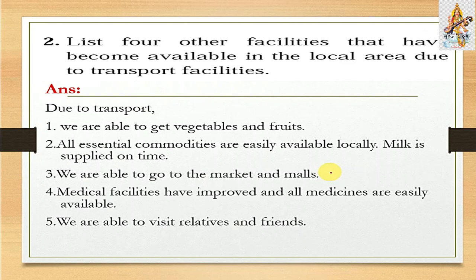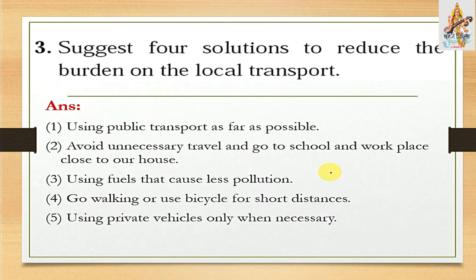For example, milk is supplied on time. Third: we are able to go to the market and malls. Fourth: medical facilities have improved and all medicines are easily available. Fifth: we are also able to visit relatives and friends.